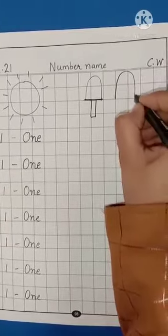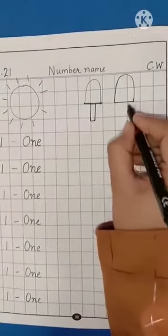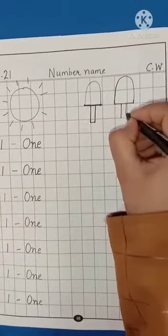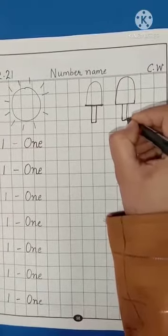Again, 1 curve. Sleeping line. Standing line. And like this. Okay.